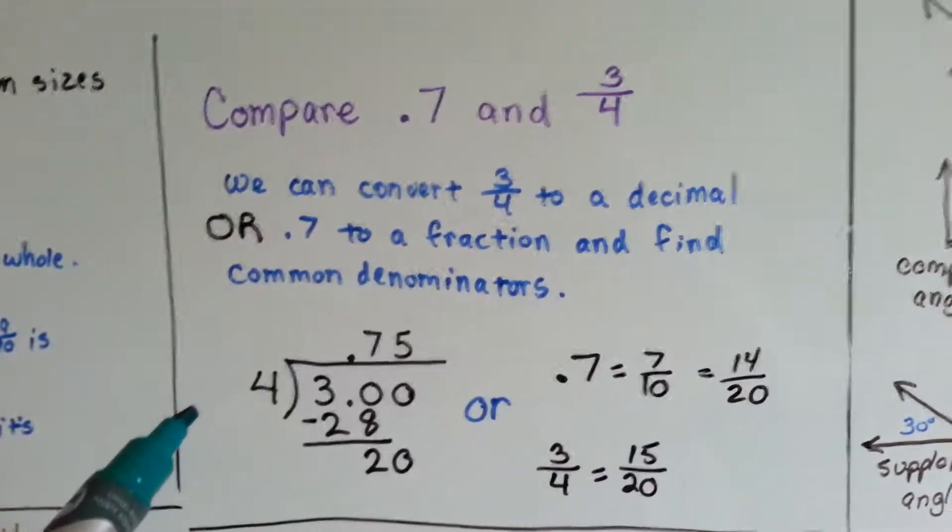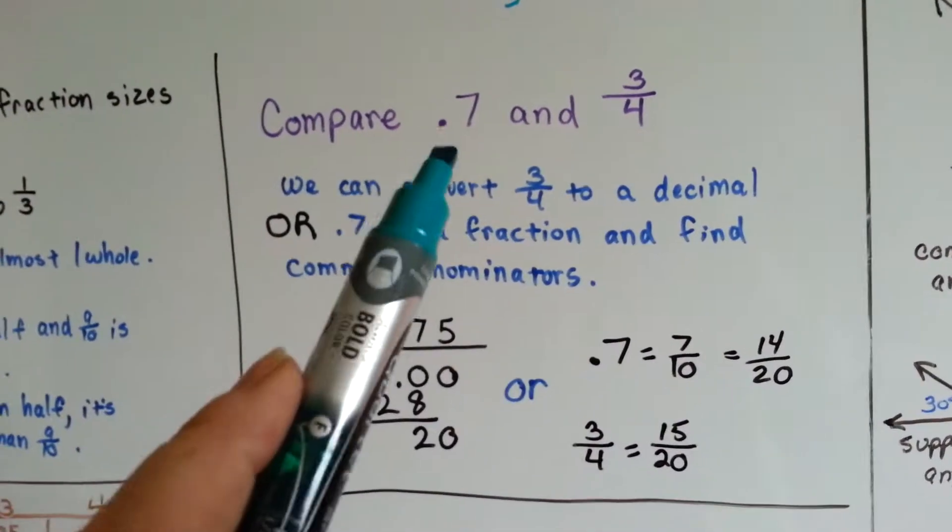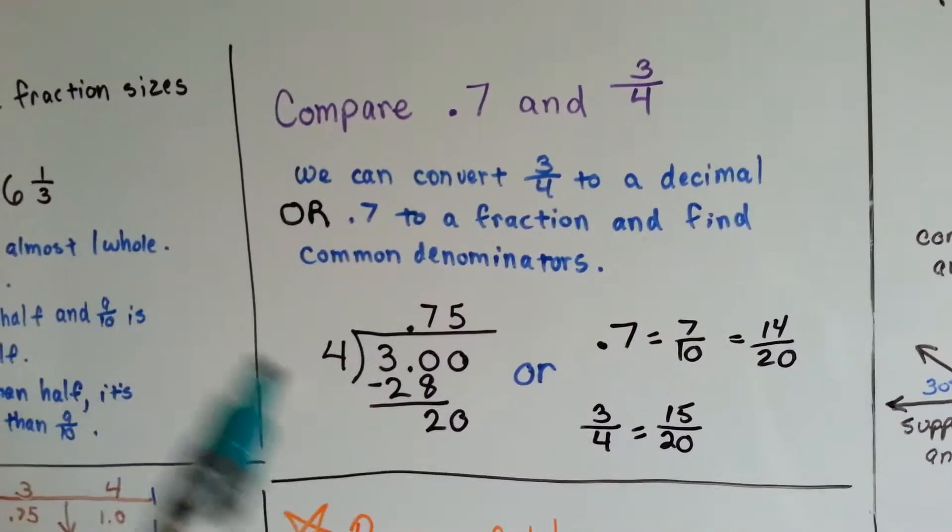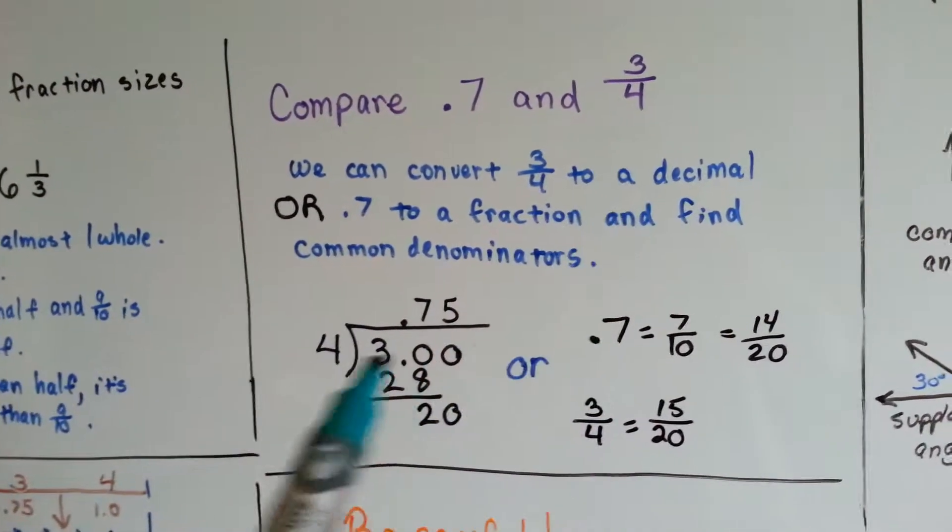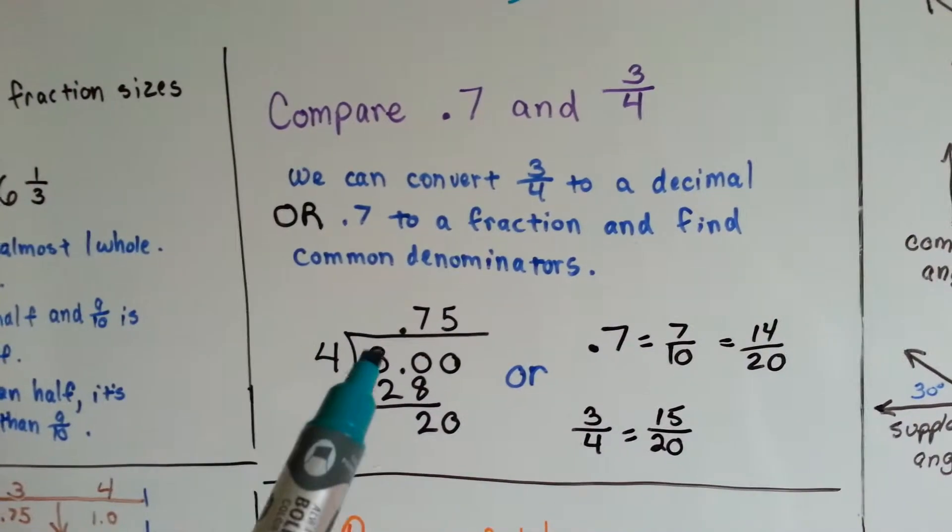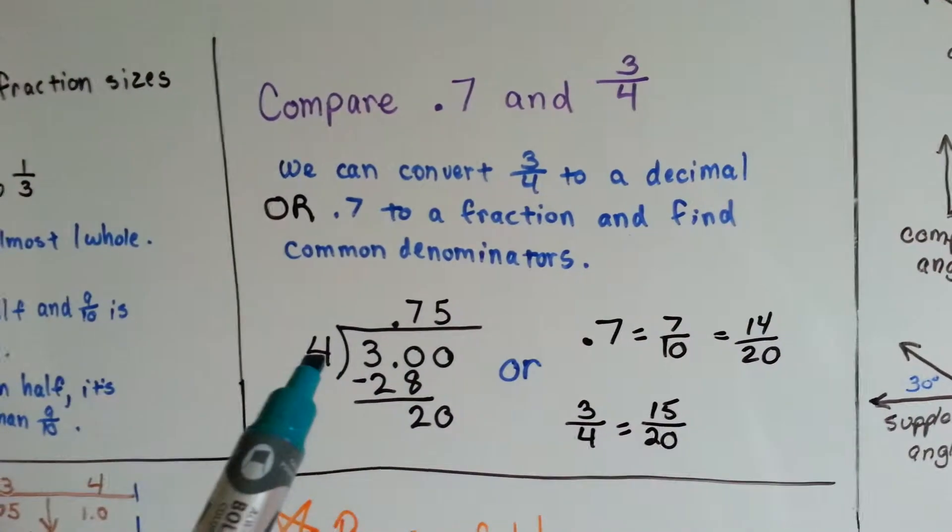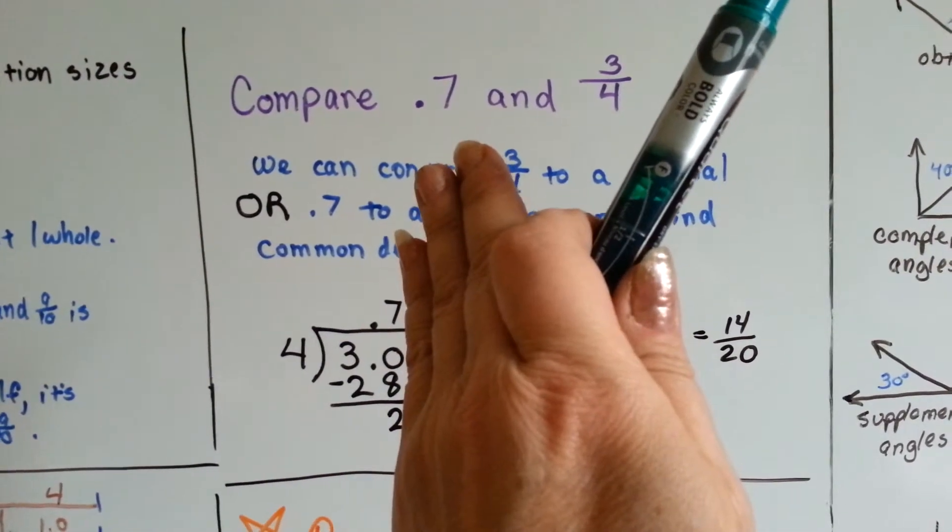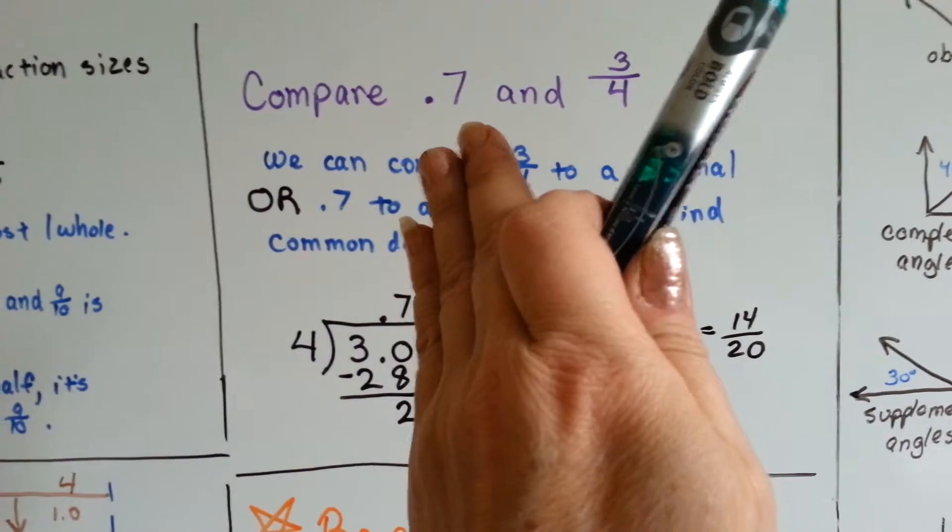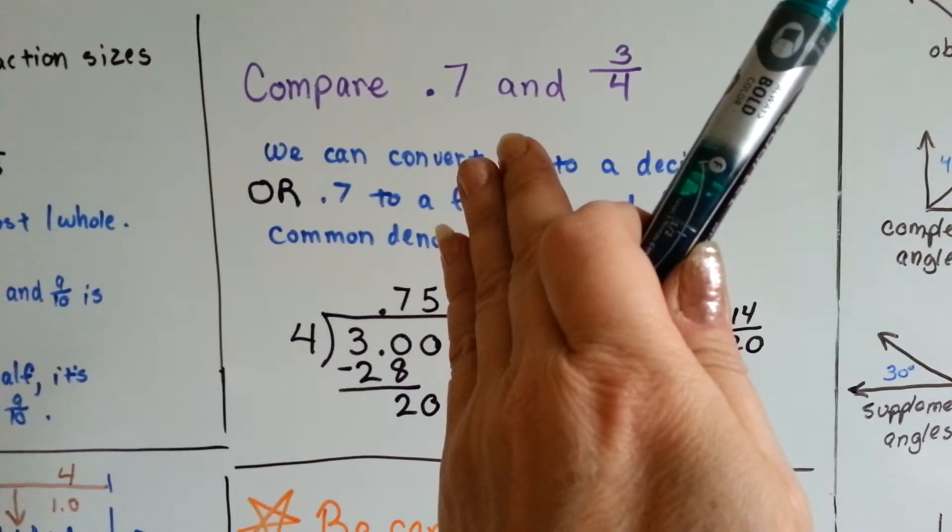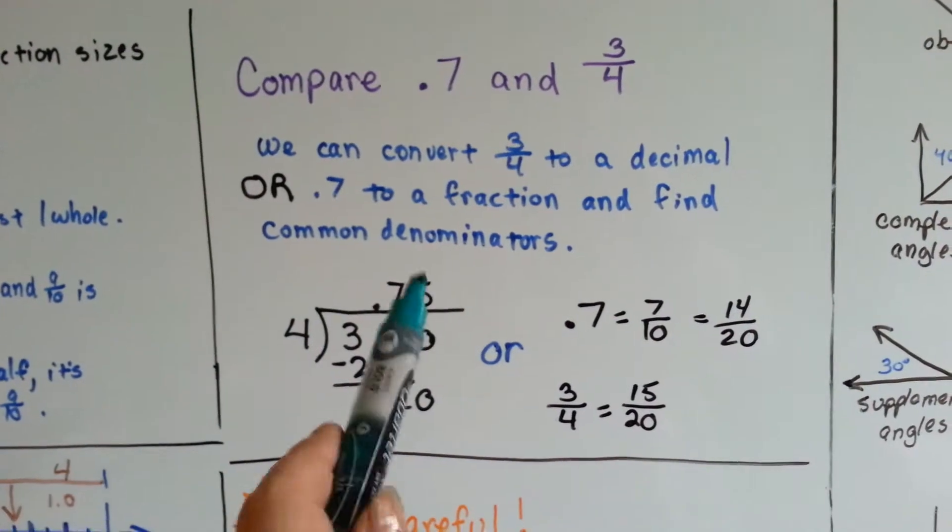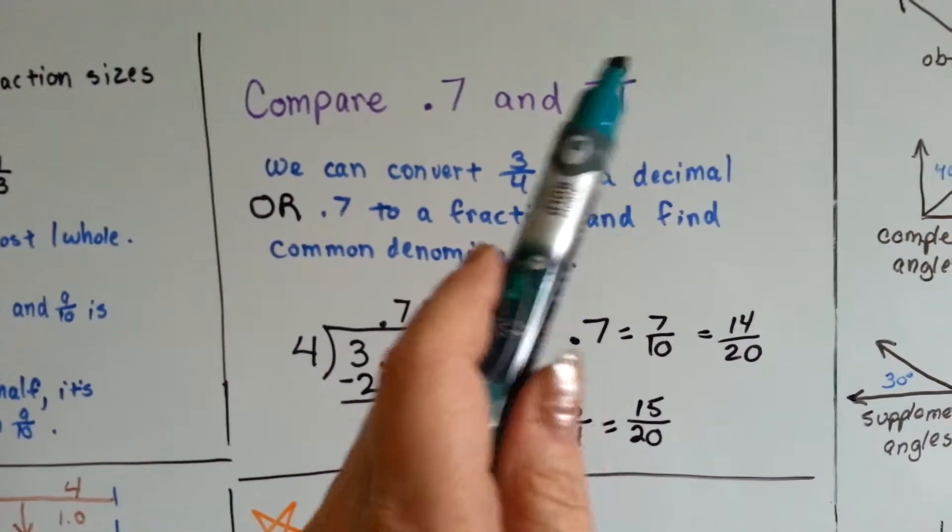If we wanted to compare 7 tenths and 3 fourths, we might have to change this to a fraction or change this to a decimal. Either way, if we change this one to a decimal, we multiply the denominator into the numerator, and we have to add a decimal point and zeros to help us do it. 4 times 7 is 28. We take that away from the 30 and we get 2. Tack on another zero and it goes into 20 five times. We know it's .75 and that it's bigger.